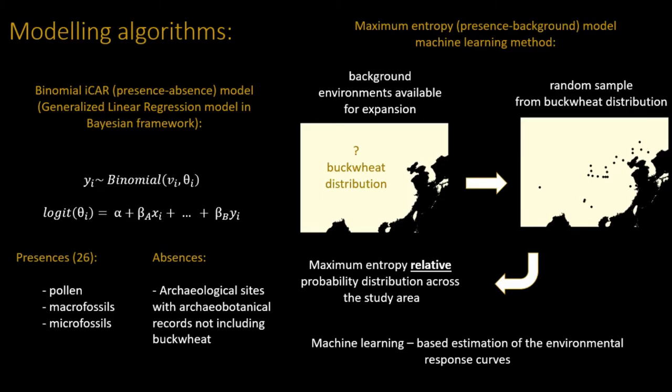The two modeling outcomes I'm trying to explore are the Bayesian approach, which isn't that widely used but many argue could be very useful for estimating species distribution especially when you have very little data, and the more widely used maximum entropy approach. Before I show you the model I would just like to highlight the differences between these approaches.